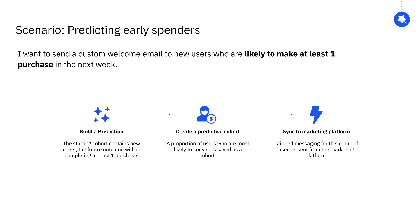Let's take a look at an example scenario. Let's say I work at an e-commerce company and I want to predict new users who are likely to make at least one purchase in the next week. I might want to send these users a custom welcome email to nudge them to convert. I'll need to build a prediction and then save a predictive cohort, which I can then sync to a marketing platform to send my communication.